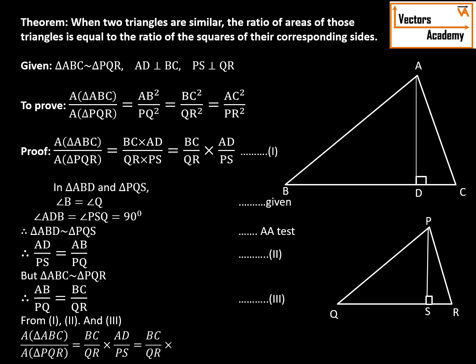BC upon QR remains same, and if you have a look at equation 2 and equation 3, both the ratios contain the same term that is AB upon PQ. So from 2 and 3, I can say AD upon PS should be equal to BC upon QR.